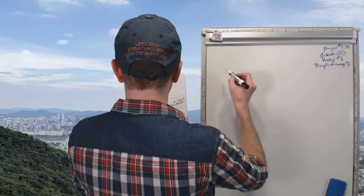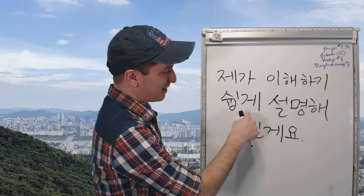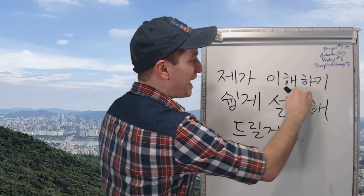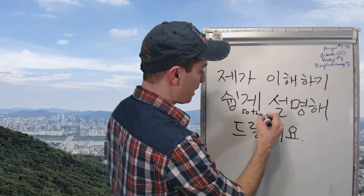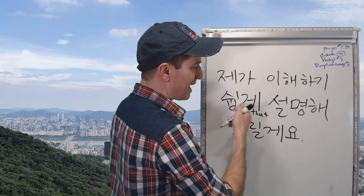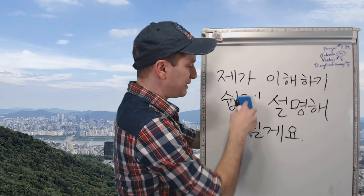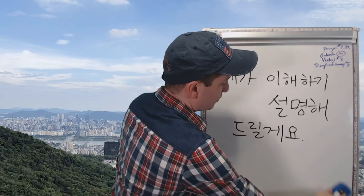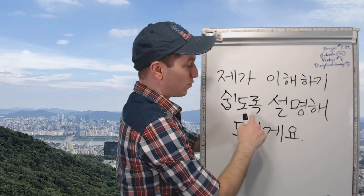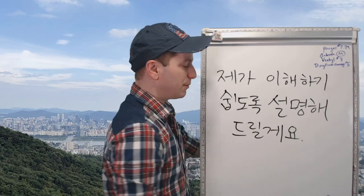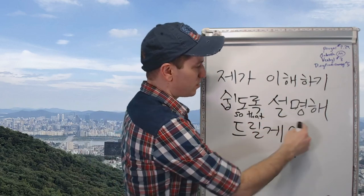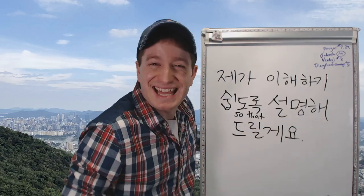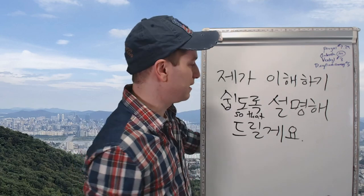You can use 도록 in the same way as 게. For example: 이해하기 쉽게 설명해드릴게요 — I will explain it to you so that it is easy to understand. 도록 has the exact same meaning as 게 literally: 제가 이해하기 쉽도록 설명해드릴게요 — I will explain it to you so that it is easy to understand. 도록 would be slightly more formal sounding than 게, but they have the same meaning.